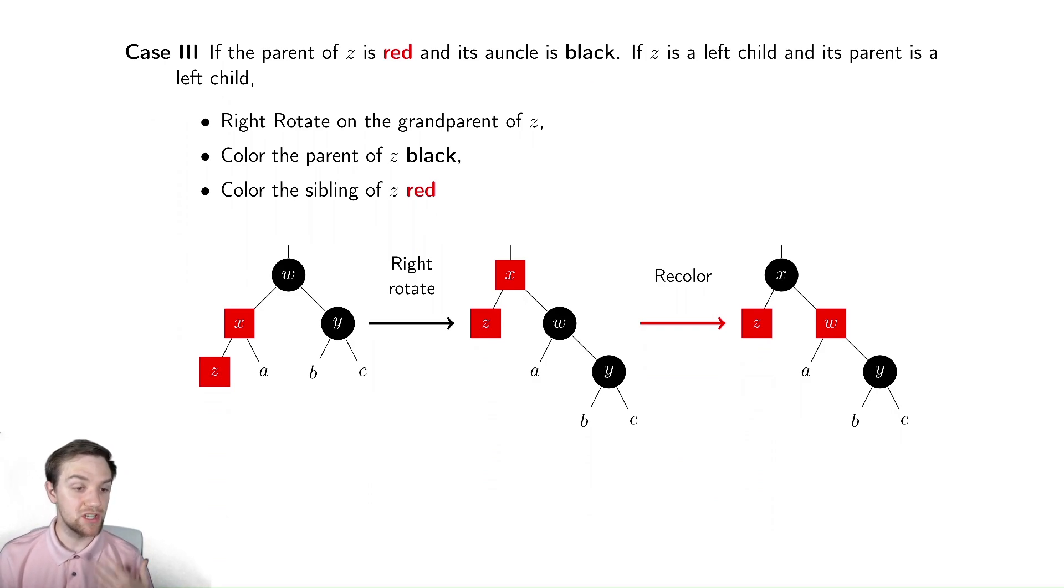After doing this, we're going to do a small recolor. We're going to color the new parent of Z, which is still the old parent, to be black, and then we're going to color the previous grandparent, which is now Z's sibling, to be red. And now, as we did before, let's check.